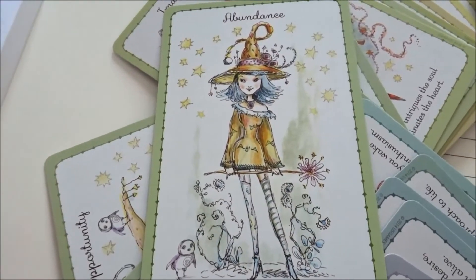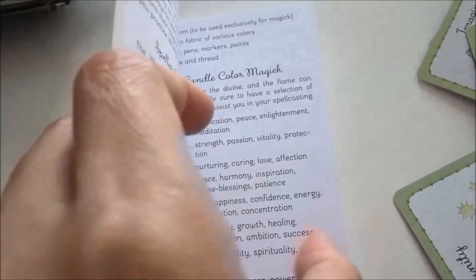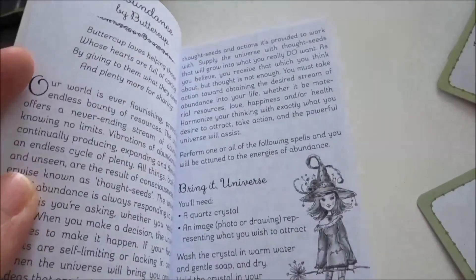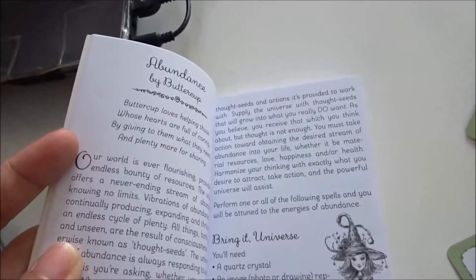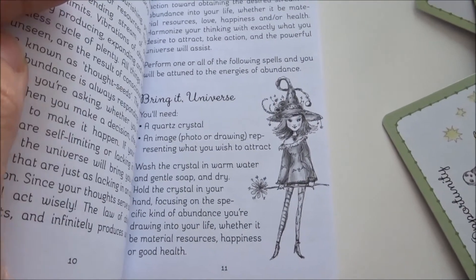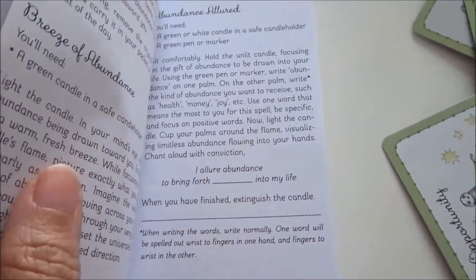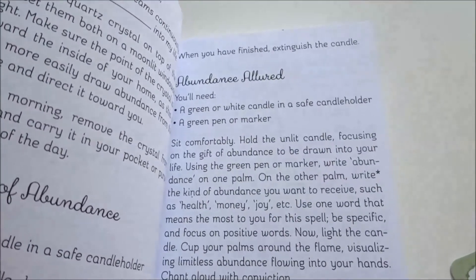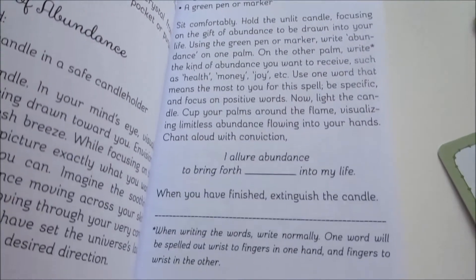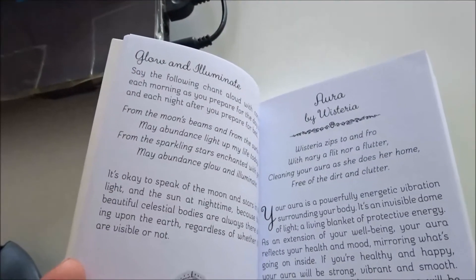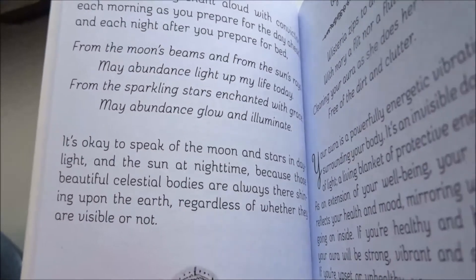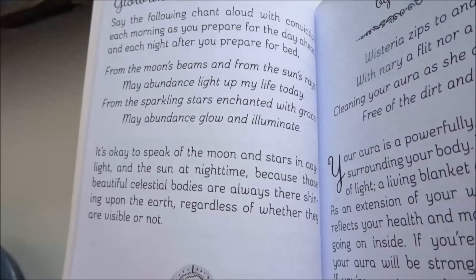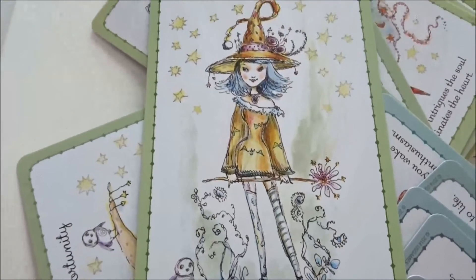For the Abundance card, the spells require quartz crystal or orange crystal, and a green candle with a safe candle holder, or a green pen or marker. The incantation reads: 'From the moon's beam then from the sun's ray, may abundance light out my life today. From the sparkling stars enchanted with grace, may abundance glow and illuminate.'